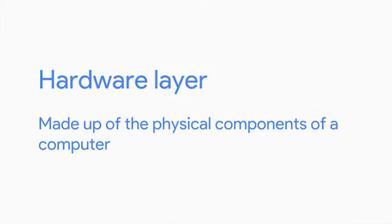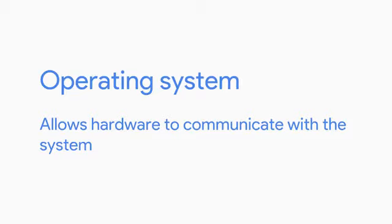The hardware layer is made up of the physical components of a computer — these are objects you can physically hold in your hand: laptops, phones, monitors, keyboards, you get the idea. In the next lesson you'll learn all of the components of a computer and how they work. You'll even be able to build your own computer by the end of this module.